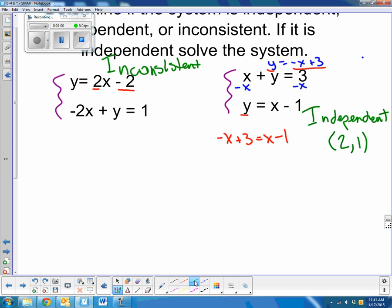I get all my x's together onto one side. Plus x plus x. 3 equals 2x minus 1. I get all my non-x's together onto one side. Plus 1, plus 1. 4 equals 2x. Divide both sides by 2. I see that x equals 2.